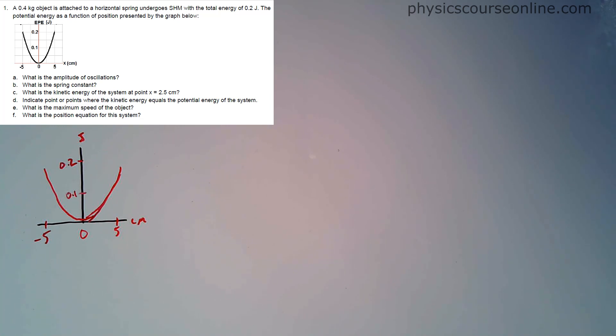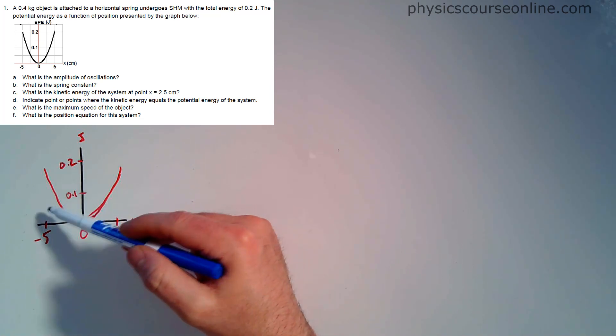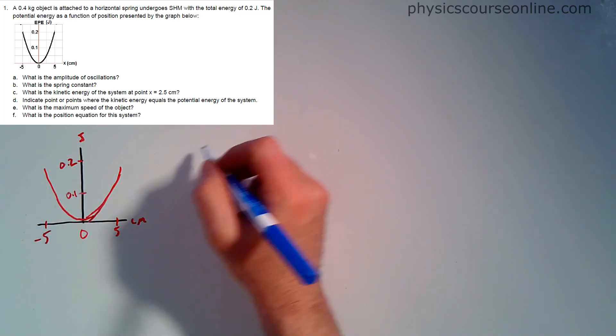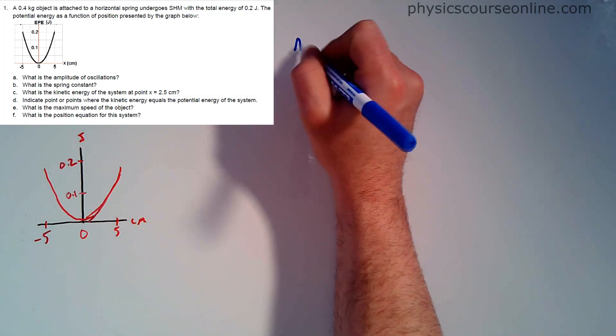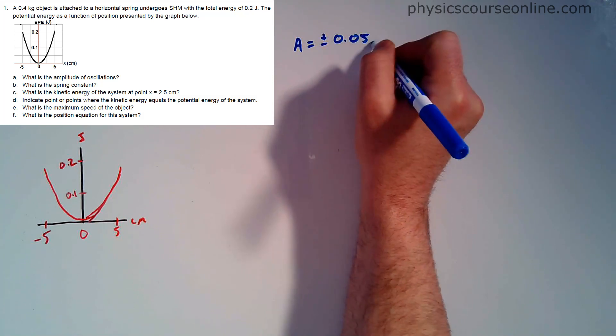First, look at part A. What is the amplitude of oscillations? Amplitude is the greatest distance it reaches on both sides of the equilibrium. So it's going to be negative 5 and 5 centimeters. My amplitude here is going to be plus or minus 0.05 meters.